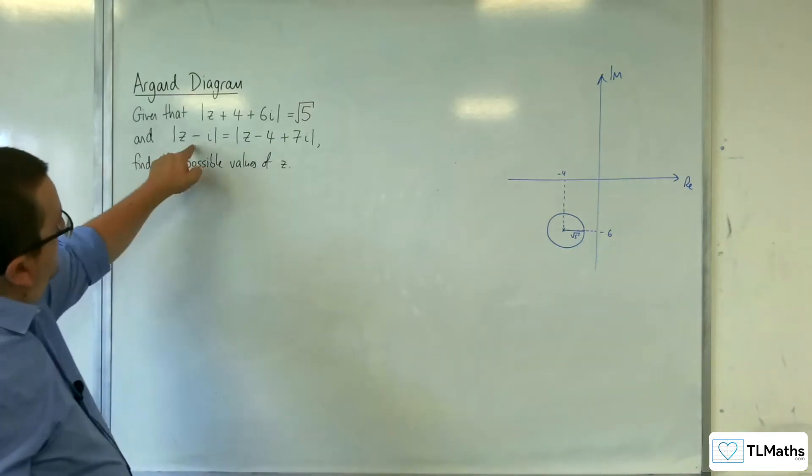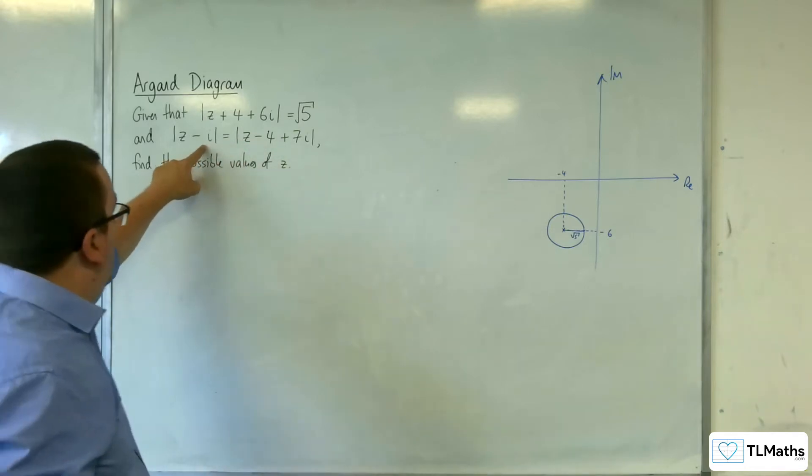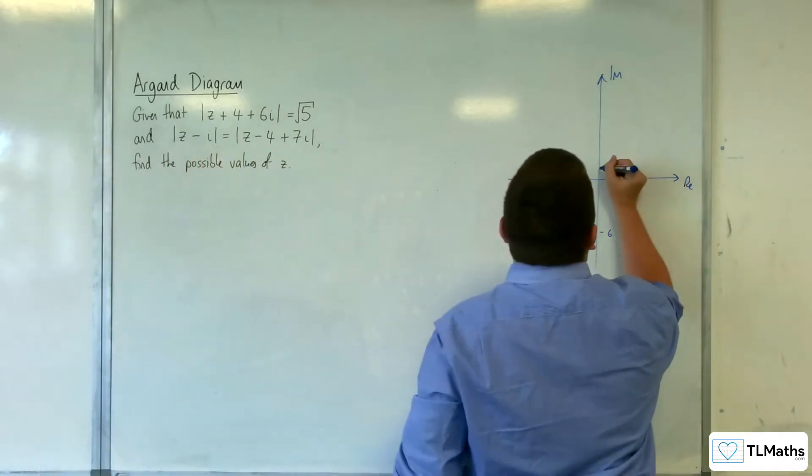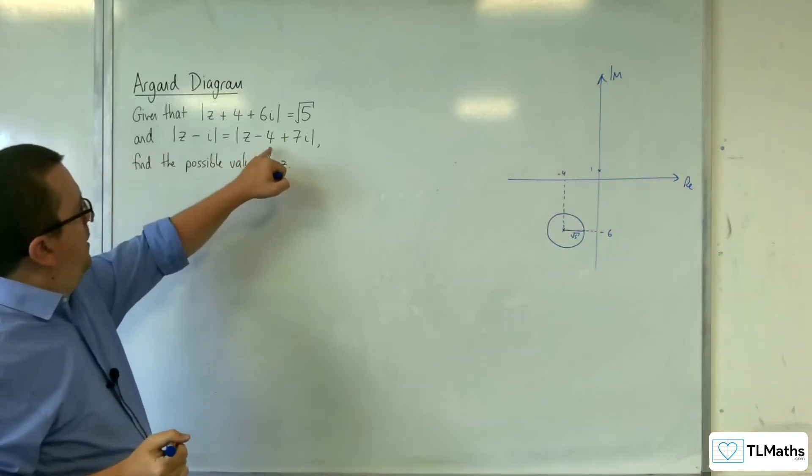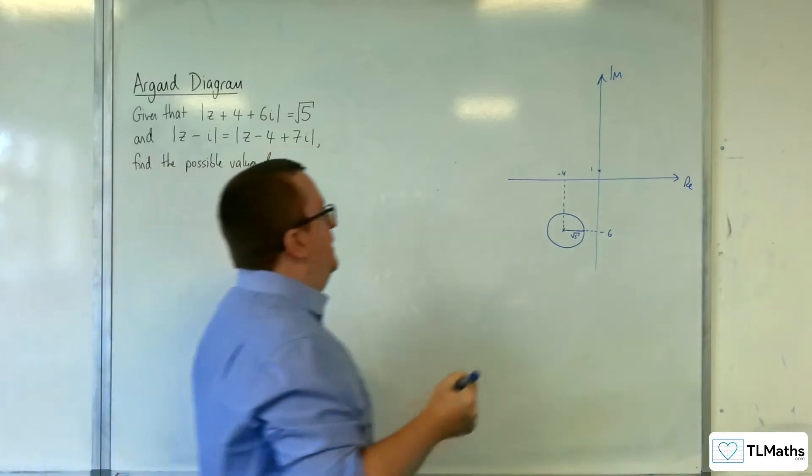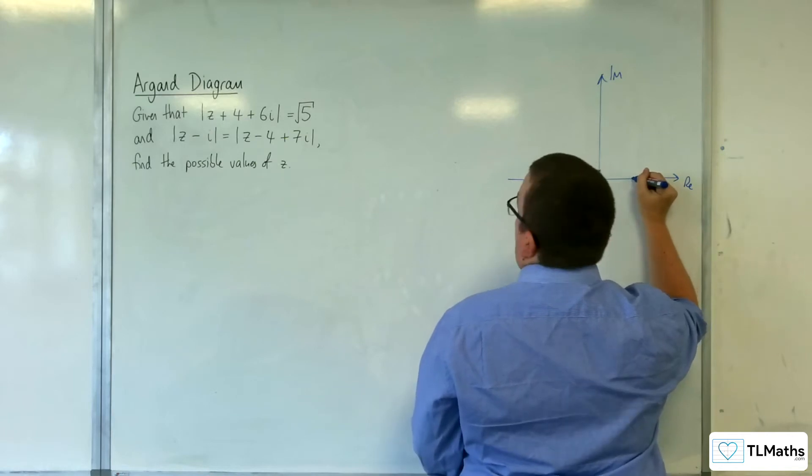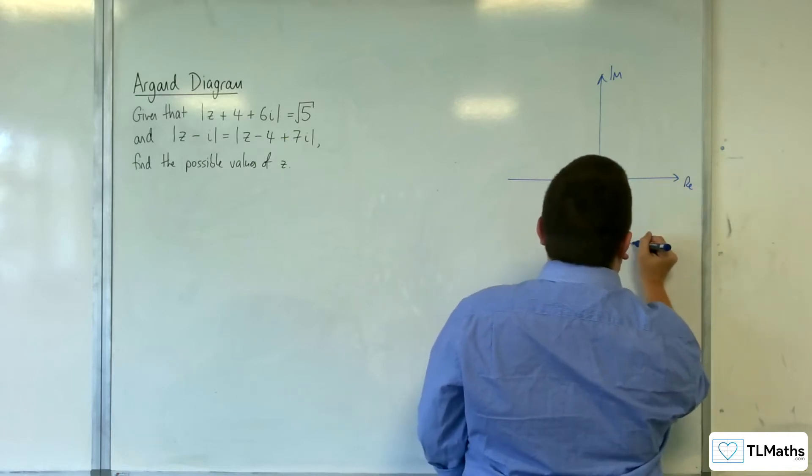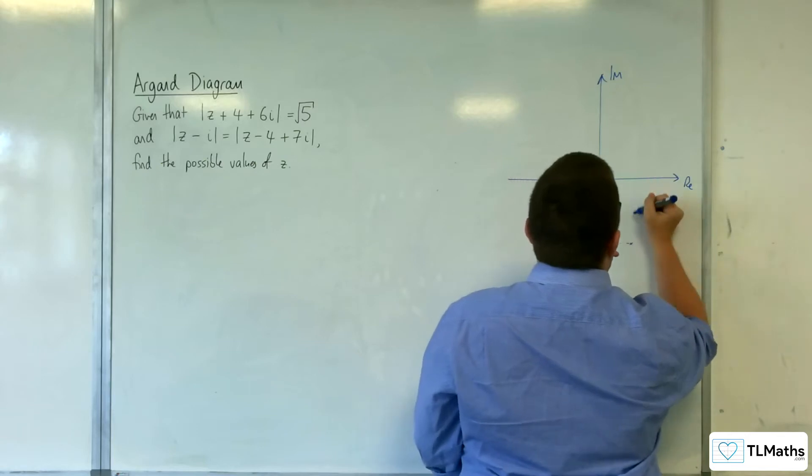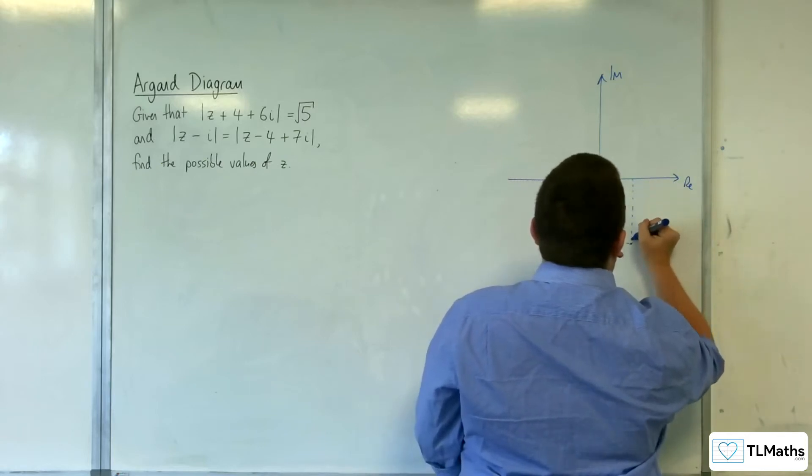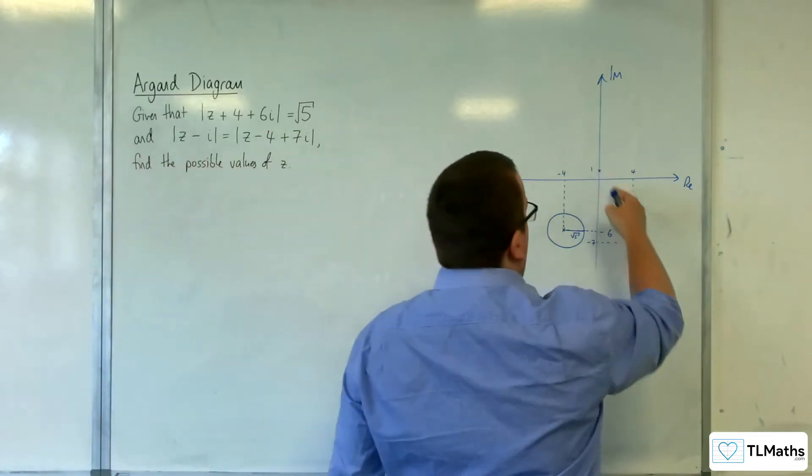Now, this second part here, this is a perpendicular bisector of these two coordinates. So we've got plus i, so 1 on the imaginary axis. And we've got minus 4 plus 7i. So 4 take away 7i. So 4 along, and then we are 7 down. So it's this point here. So that's minus 7, and that's 4. So we want the perpendicular bisector of those two points.